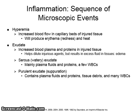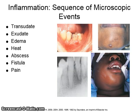The exudate helps to dilute injurious agents but results in excess fluid in the tissues, otherwise known as edema. The exudate can be watery or serous, mainly composed of plasma fluids and proteins with a few white blood cells, or it can be purulent exudate or suppuration, which contains plasma fluids and proteins, tissue debris, and many white blood cells. The sequence of events are transudate, then exudate, followed by edema, heat, abscess formation, fistula, and pain. The pictures shown include examples of abscess and fistula formation.